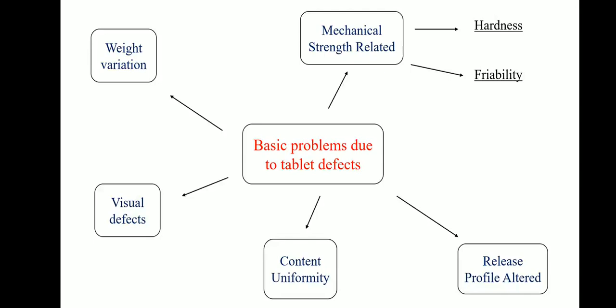The second problem is mechanical strength related, which includes two sub-problems: hardness and friability. The hardness of a tablet depends on the weight of the material used, the space between the upper and lower punches at the time of compression, and the pressure applied during compression. It also depends on the nature and quantity of excipients used. The friability test is performed to evaluate the ability of tablets to withstand abrasion in packing, handling, and transporting.